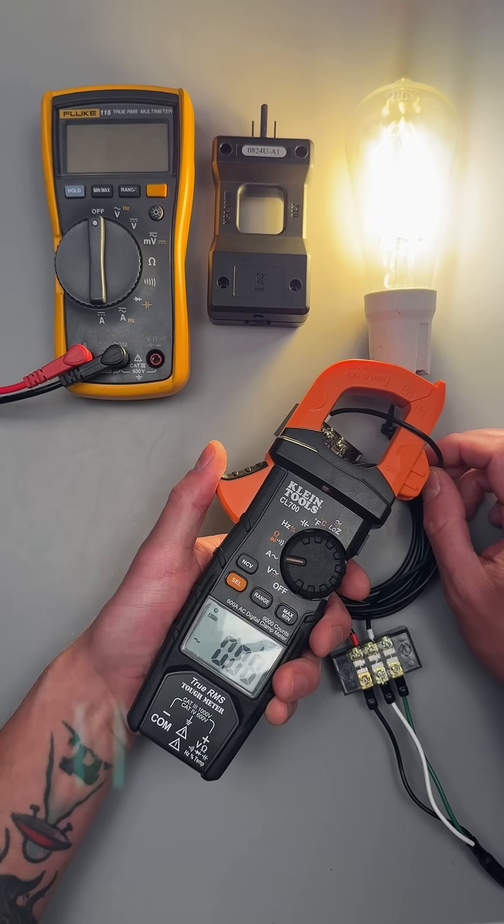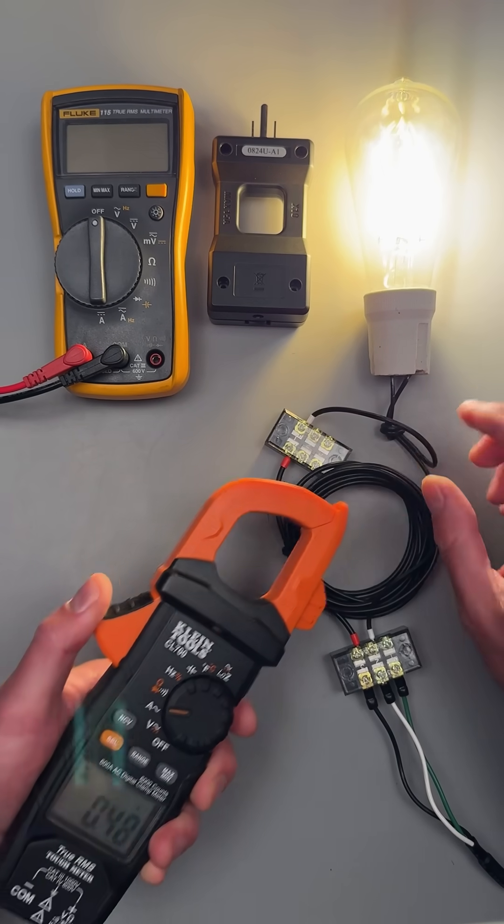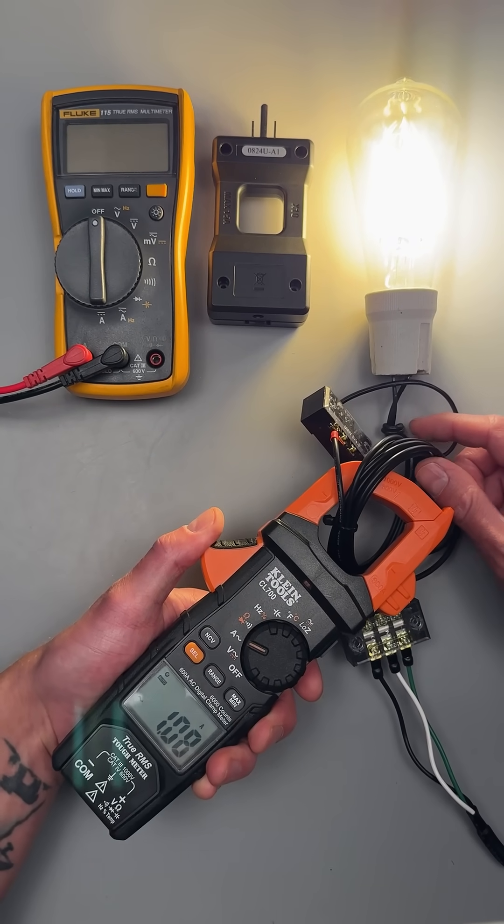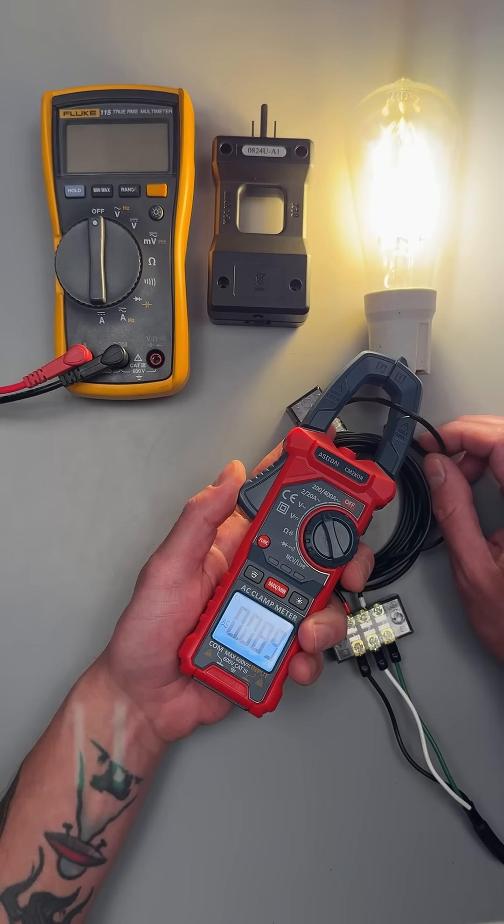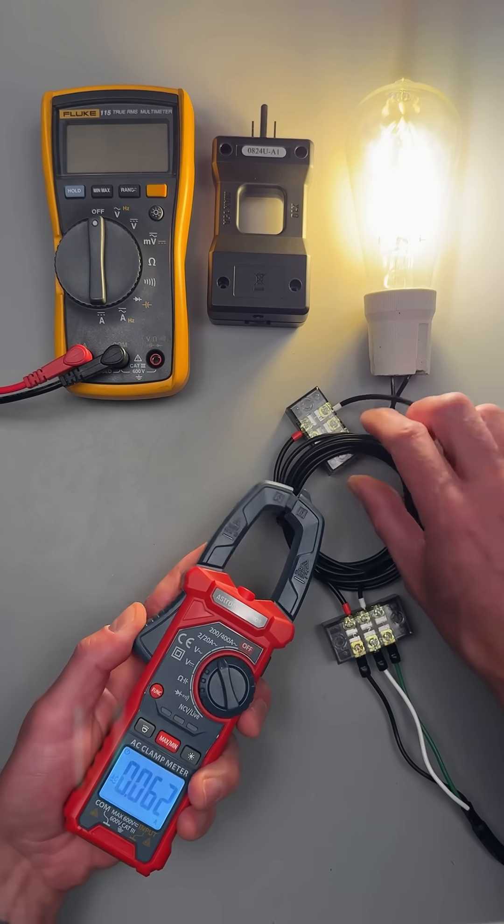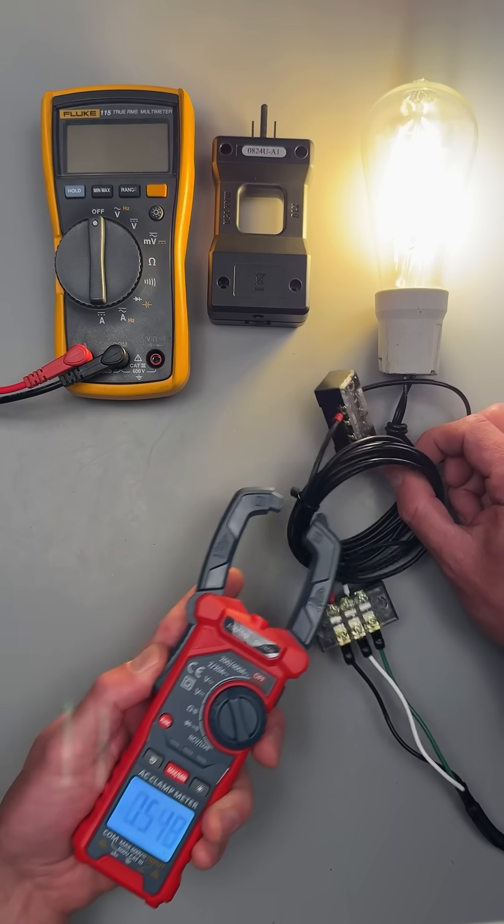If we take a look on our Klein, we'll see about 80 milliamps. Then if we times it by 10, 108. And then I'm not sure if we got the Astro AI in there. It's just showing 88 milliamps and then times 10, 108 milliamps.